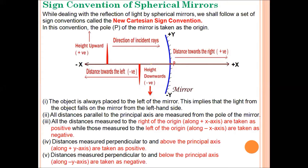Next we have Sign Convention of Spherical Mirrors. These are the sets of rules applied while solving spherical mirror numericals. According to new Cartesian sign conventions: the object is always placed to the left of the mirror, so light falls on the mirror from the left. All distances parallel to the principal axis are measured from the pole. Distances to the right are positive; distances to the left are negative. Distances perpendicular and above the principal axis are positive; those below are negative.